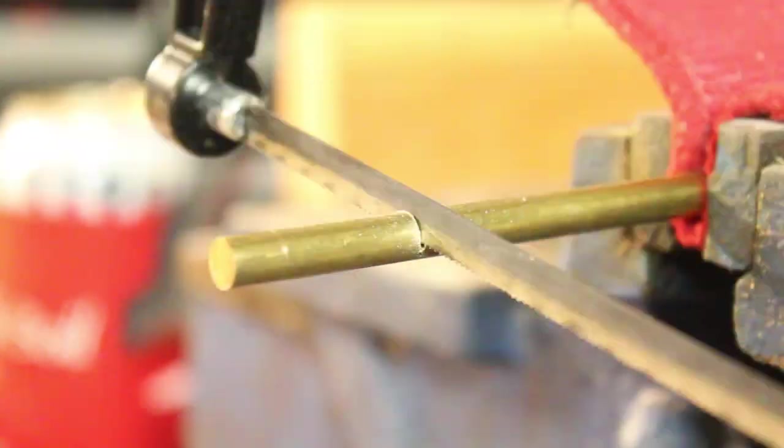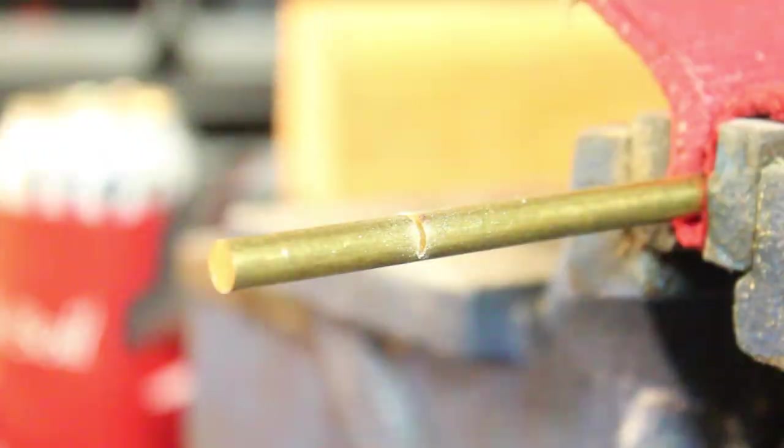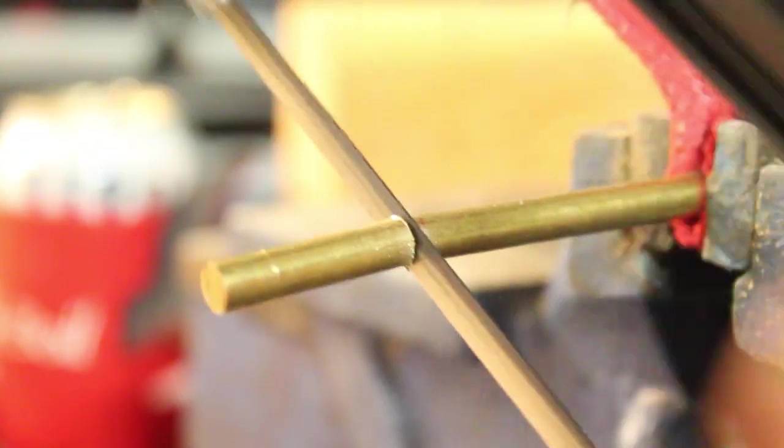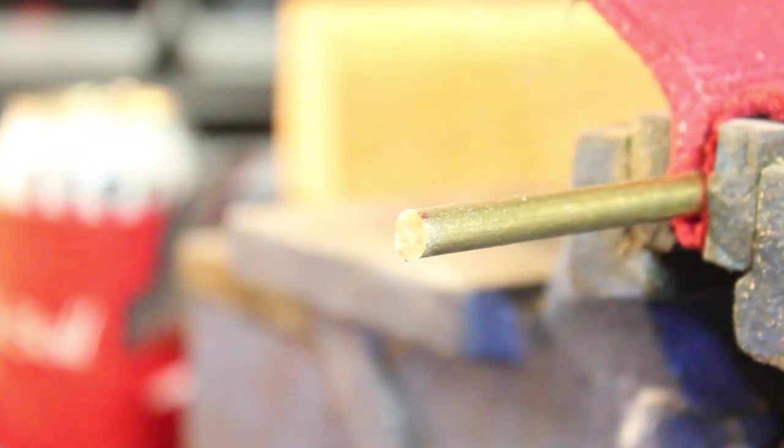Next, I cut down some quarter inch brass rod to use as the center shaft. One piece will be left alone, and the other will be turned down to make smaller guides.